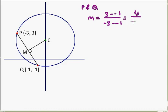So, we're getting 4 on the top, and minus 2 on the bottom. So, 4 over minus 2 is minus 2.